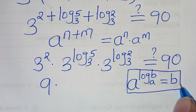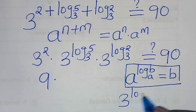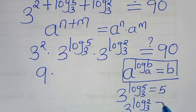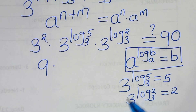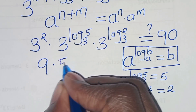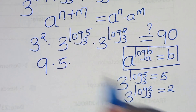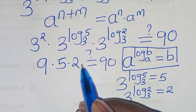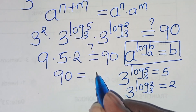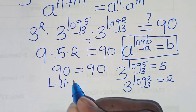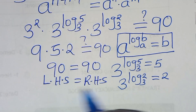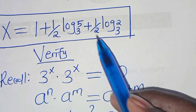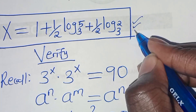Now let's apply this logarithm property: 3 raised to power log base 3 of 5 is equal to 5, and 3 raised to power log base 3 of 2 is equal to 2. Substituting here, 3 to power 2 is 9, times 5 times 2. So 9 times 5 is 45, times 2 is equal to 90, and this is equal to 90. This proves that the value of x, which is 1 plus one half log base 3 of 5 plus one half log base 3 of 2, actually satisfies the equation.